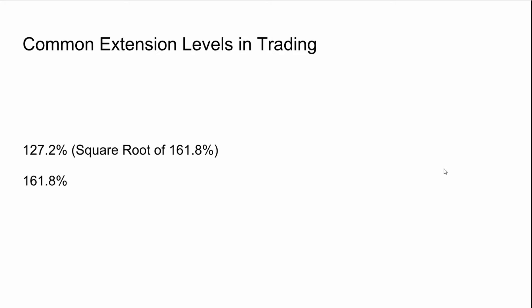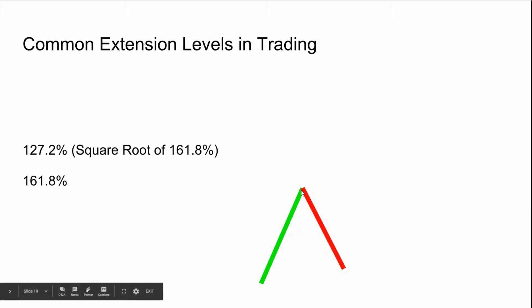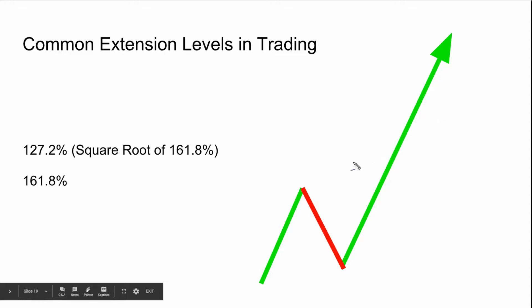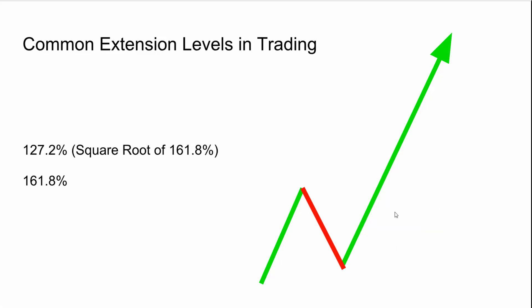Now we're talking extension levels — an extension of the prior move beyond 100%. Let's say we're in an uptrend that has pulled back a little bit. If the stock breaks through the 61.8% and 78.6% retracements, it's a good chance it's going to go up to that 1.272 extension. If it breaks the 1.272, it's likely going to go up to the 1.618. A lot of times the stock will trade right up to that 1.272 extension and stall out, maybe even fade down a little bit before getting some steam.